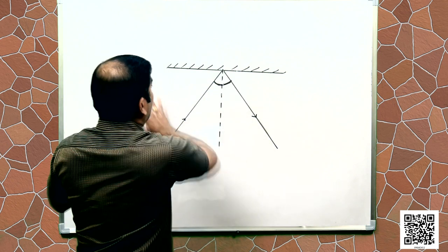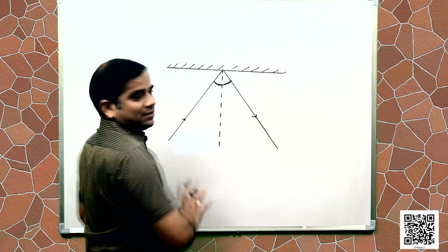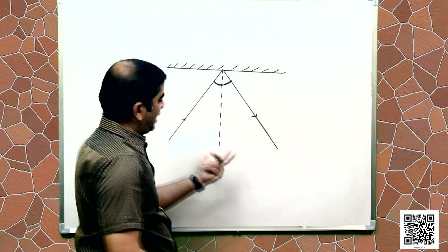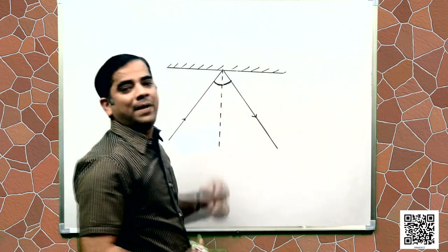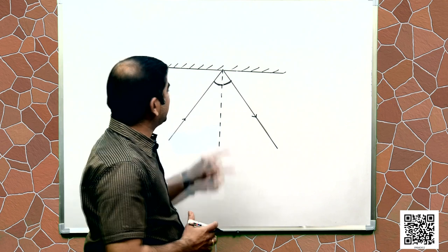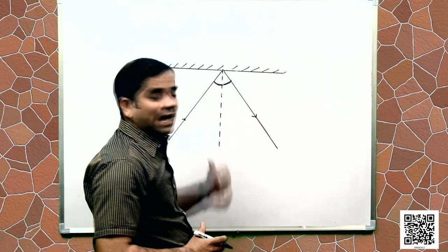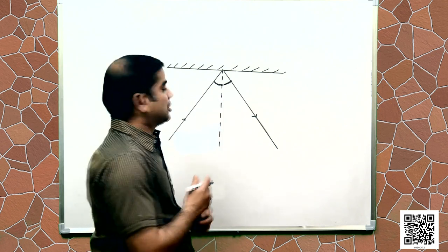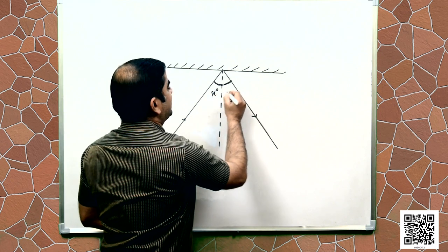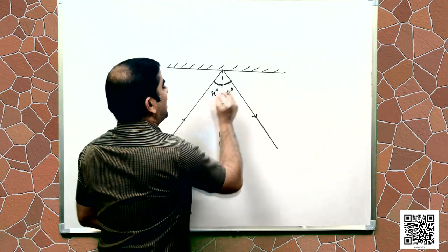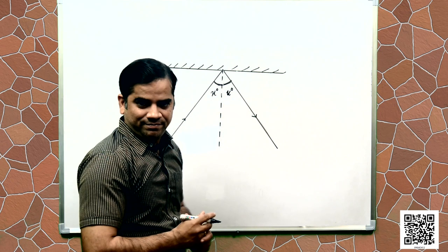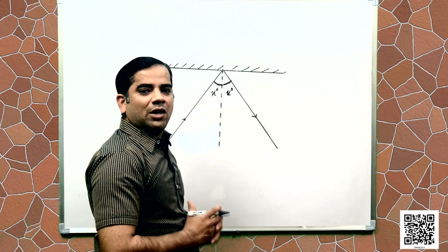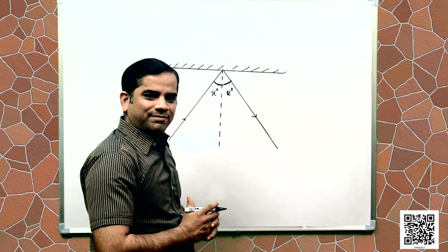They are on a single plane. So this is a plane and they lie on the same plane. In this case, both the angles have equal value — suppose this is x degrees, this is also x degrees. They are exactly equal to each other.